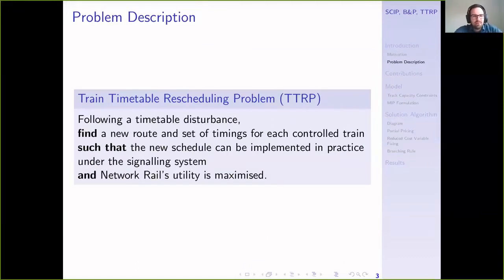This is the problem we're trying to solve, the train timetable rescheduling problem. Following a timetable disturbance, find a new route and set of timings for each controlled train, such that the new schedule can be implemented under the signaling system and network rail's utility is maximized. By controlled train, I mean any train scheduled to pass through a defined area of track during a time horizon, typically one hour. We're focusing on large complex station areas, not large parts of the railway network, but bottlenecks on it.